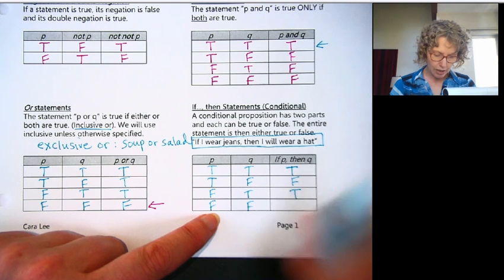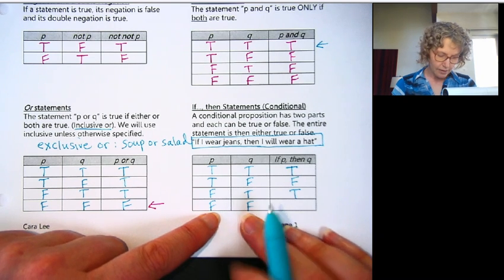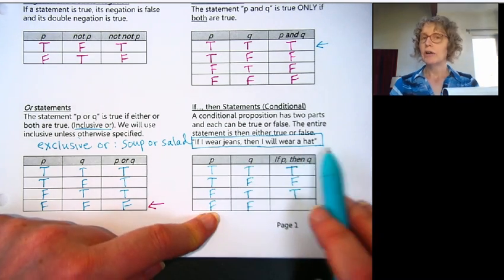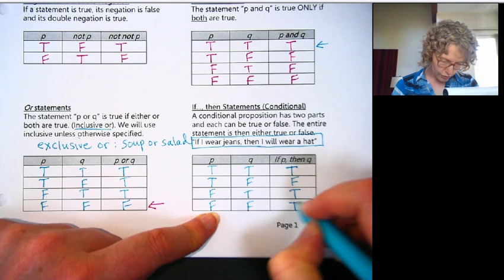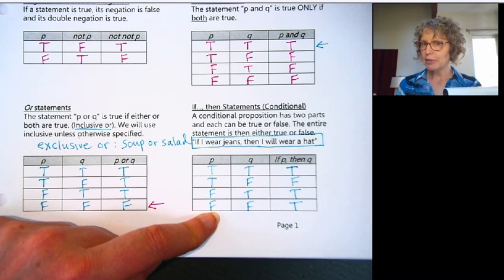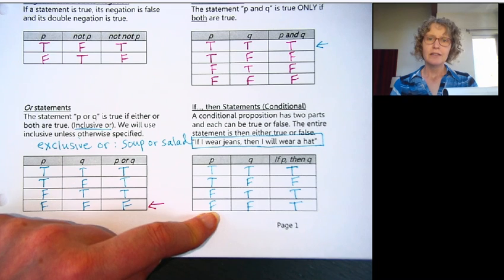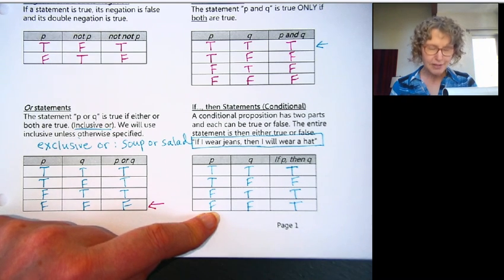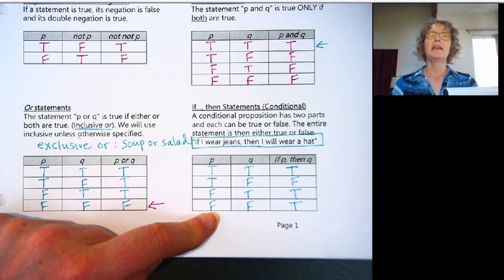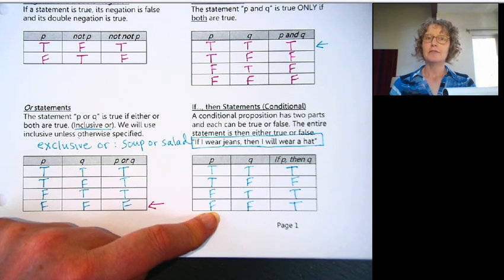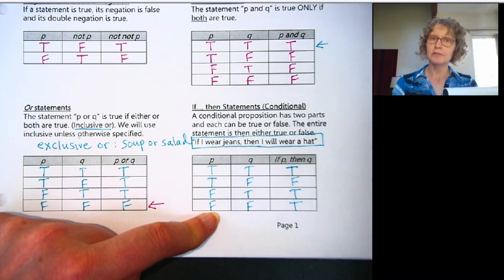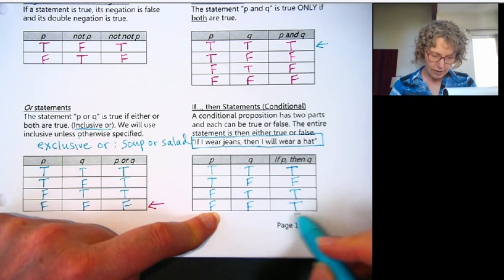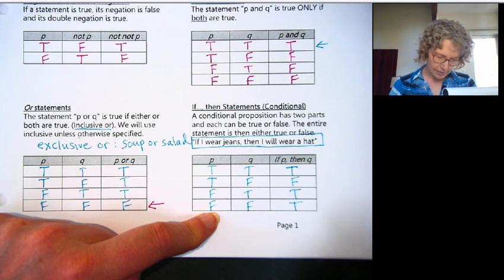The last one: Jamie's not wearing jeans and also not wearing a hat. So Jamie said if I wear jeans, then I'll wear a hat. They're wearing neither, so they haven't lied. We call this true. They haven't said anything about what happens if they don't wear jeans. You could run into this a lot when someone makes a campaign promise: if I'm elected, I will do this. If they're not elected, well, they might do it or not. They might not be in the position to, but they're really only making a statement about if they get elected. So if they don't, we would say they haven't told a lie. That is true.